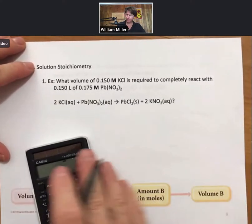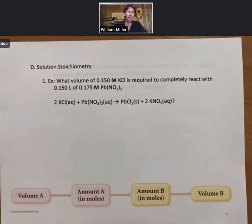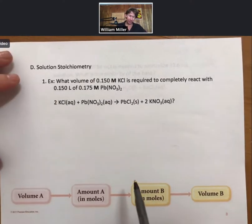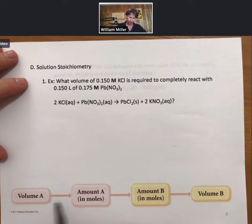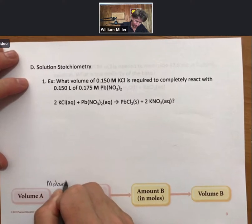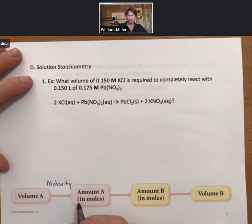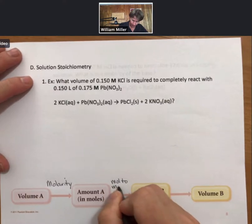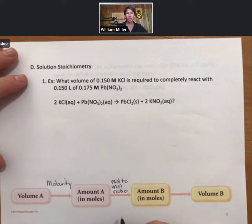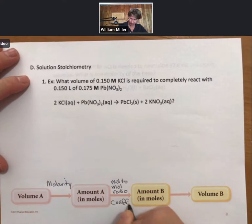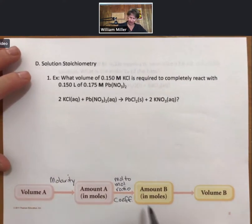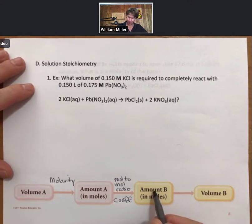Let's continue with solution stoichiometry, meaning calculations involving reactions and solutions. Those calculations will typically follow a pattern in which you're given a volume and a molarity, which will allow you to convert that into moles of one substance. You'll then convert moles of one substance into moles of another substance using a mole-to-mole ratio, and the mole-to-mole ratio always involves the coefficients from a balanced reaction. From there you'll have an amount of another substance in the reaction, and you'll use the molarity to get back to a volume of that new substance.